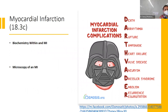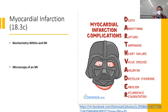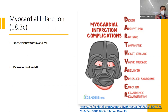A mnemonic for myocardial infarction complications is Darth Vader: Death, Arrhythmia, Rupture, Tamponade, Heart failure, Valve disease, Aneurysm, Dressler syndrome, Embolism, Recurrence, Regurgitation. Pretty much every major bad cardiac condition can occur after a heart attack.